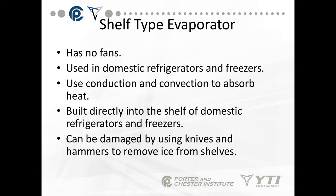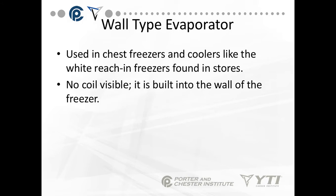The shelf type evaporator also has no fans. It's used in domestic refrigerators and freezers, primarily freezers, and uses conduction and convection to absorb heat. It's built directly into the shelf, and it's very frequently damaged by homeowners using knives and hammers to remove ice instead of defrosting. The wall type evaporator is used in chest freezers and coolers like white reach-in freezers found in stores — there are no visible coils, as the coil is built into the wall of the freezer.